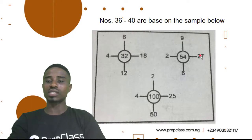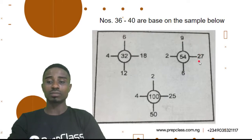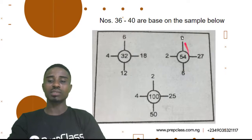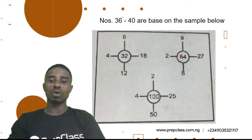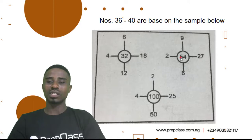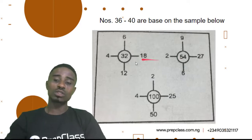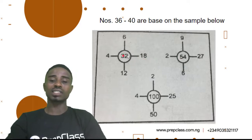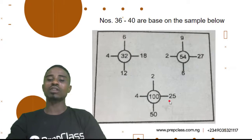So, 27 divided by 9 will give me 3. 3 times 2 will give me 6. 9 times 6 will give me 54. So, that ought to be the correct answer. So, 72 is the answer that ought to be here. Let's try this one out as well.